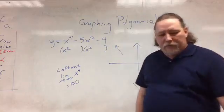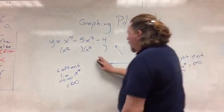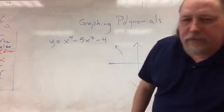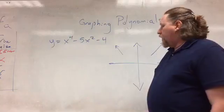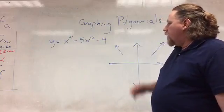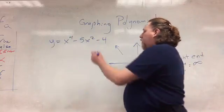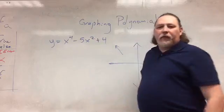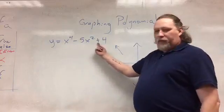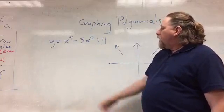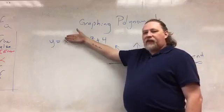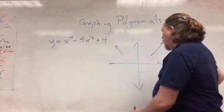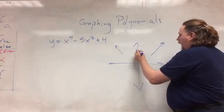Now we have to figure out what's going on in the middle. First, y-intercept. Where is my y-intercept? Oh, pardon me — that negative 4 right there should be a plus 4. So covering up everything with x, we get 4. Our y-intercept is located at 4. Now, what about finding the x-intercepts? We're going to factor.